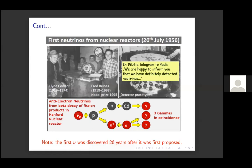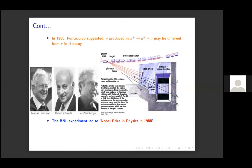These experimenters sent a telegram to Pauli saying they were happy to inform him that they had definitely detected the neutrino. The first neutrino was discovered 26 years after it was first proposed.